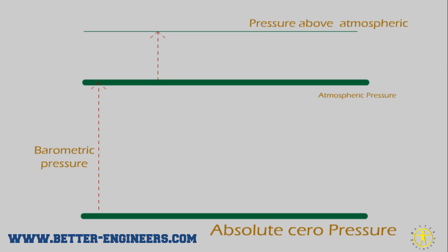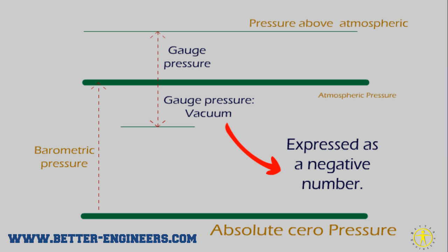There is also pressure above the atmospheric — for example, the one inside a pressurized reactor. If we measure this pressure relative to the atmospheric one, we will talk about gauge pressure. This can be positive, as it is shown now, or it can be negative, in which case it is known as vacuum, and it is expressed as a negative number.